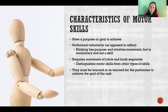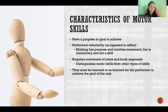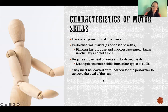Motor skills must be learned or relearned for the performer to achieve the goal of the task. Blinking doesn't qualify because we don't have to learn how to do it — it happens automatically. Walking, on the other hand, is a skill we learn as toddlers, and if a serious injury or surgery occurs, sometimes we have to relearn it — which confirms it is a true motor skill.